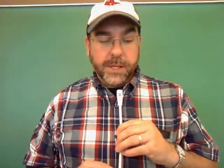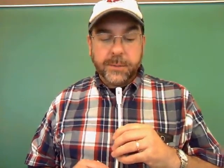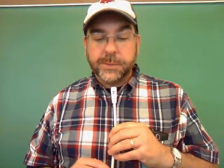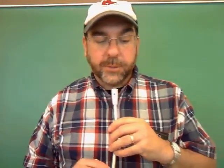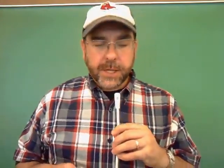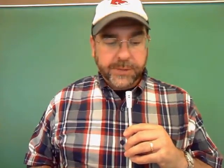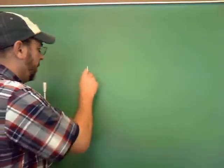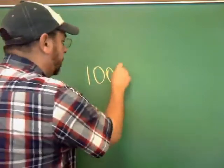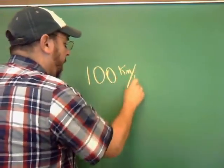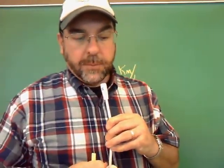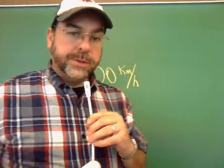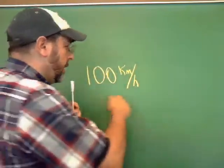Alright, so then the actual problems. Number one: the speed limit on some interstate highways is roughly 100 kilometers per hour. What is this in meters per second and how many miles per hour is this? A lot of times we'll want things in meters per second when we're dealing with physics. So what we have there is 100 kilometers per hour.